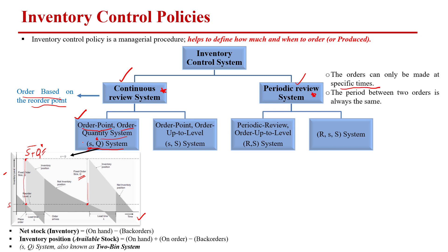The s,Q system is also known as the two-bin system. Imagine we have two bins — bin one and bin two — both filled. We decide to place an order when bin one becomes empty, and the order quantity equals the capacity of bin one, so that we can refill it. Similarly, in the s,Q system, whenever inventory reaches the reorder point 's', we place a fixed order of quantity Q.